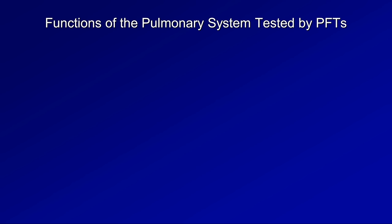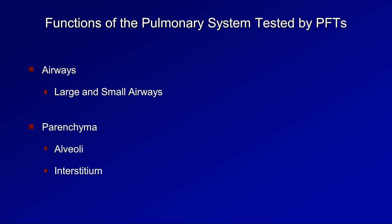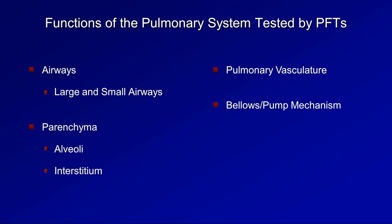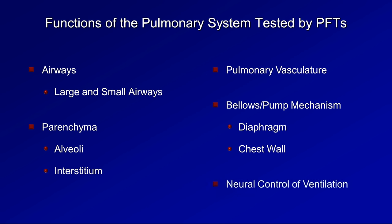What are the actual functions of the pulmonary system that are tested by PFTs? PFTs actually provide information about every component of respiration. It tells us about the patency of the airways, both large and small, about the parenchyma, including both the alveoli and interstitium, the pulmonary vasculature, the bellows and pump mechanism that is actually responsible for the changes in intrathoracic pressure that cause air to move in and out of the lungs — this includes both the diaphragm and the chest wall. Finally, is the neural control of ventilation: is the brain telling the lungs to breathe as frequently and deeply as it should?